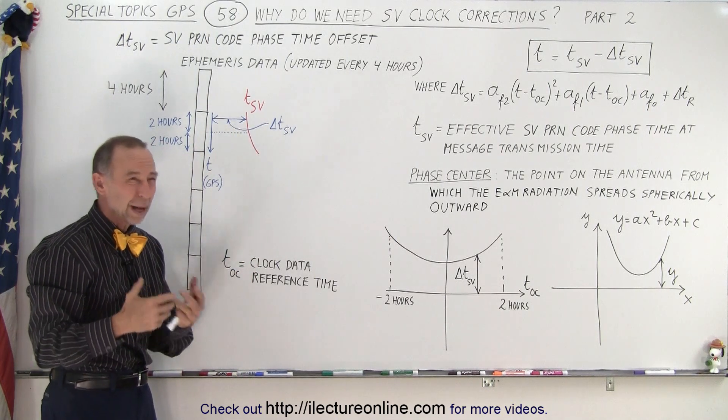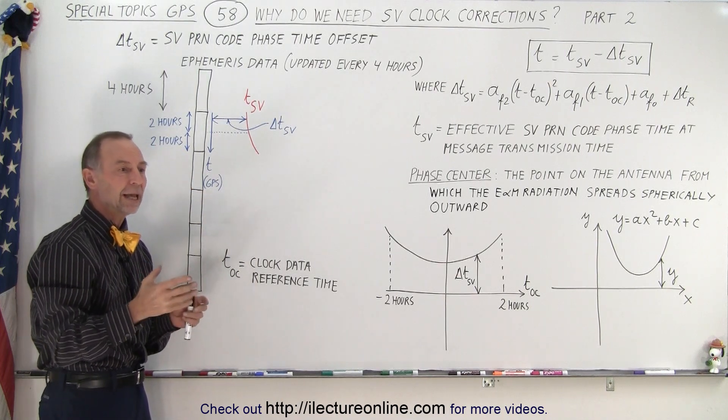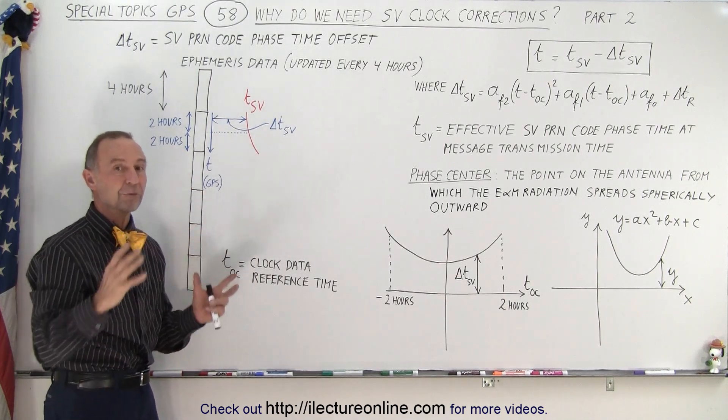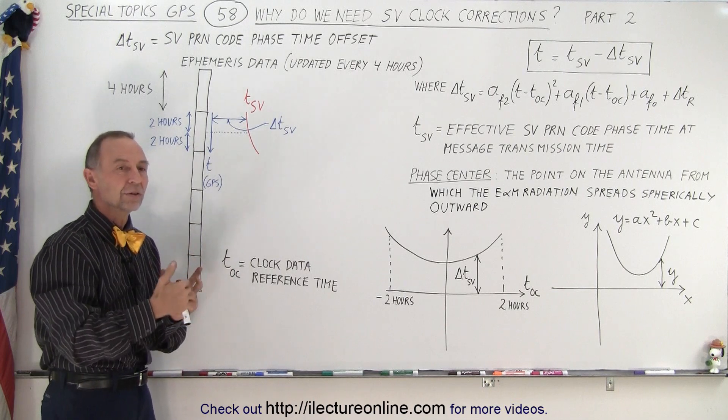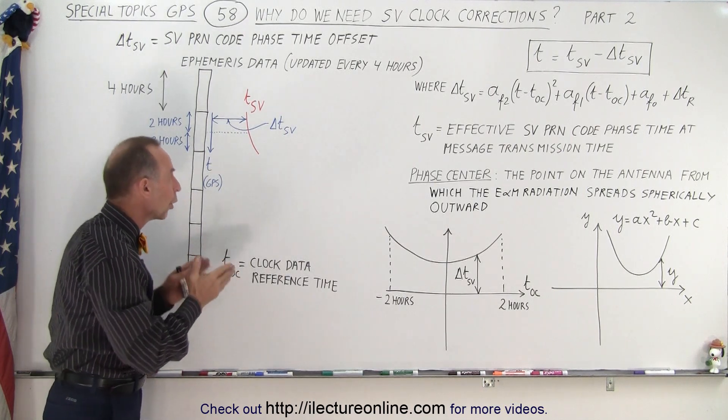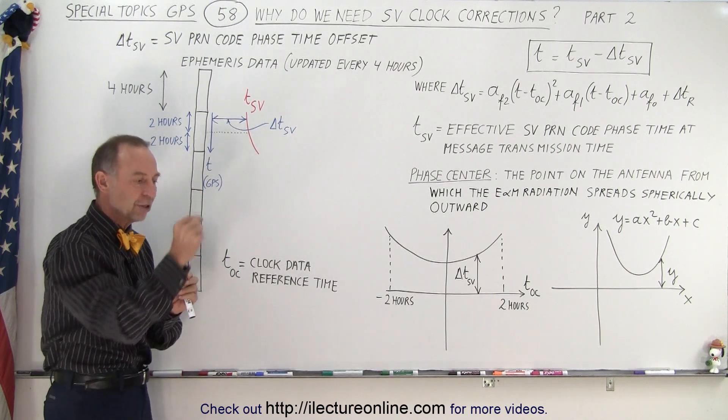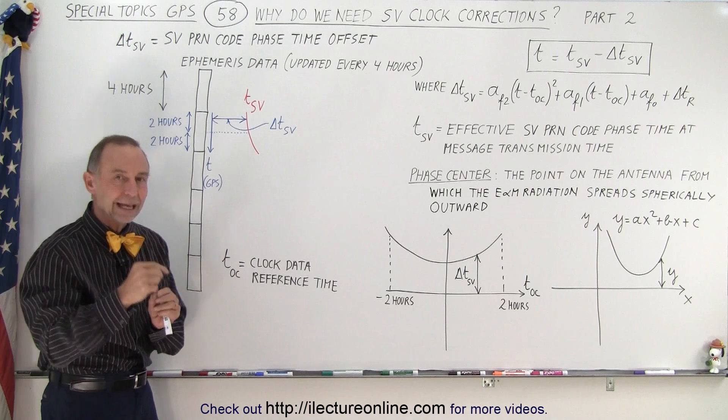Now we can store up to about I believe 72 days worth of ephemeris data, so in case that we cannot update it for whatever reason it can continue with older and older ephemeris data. But again we always adjust for that by finding the exact difference between the GPS time on earth and the SV time on the satellite.